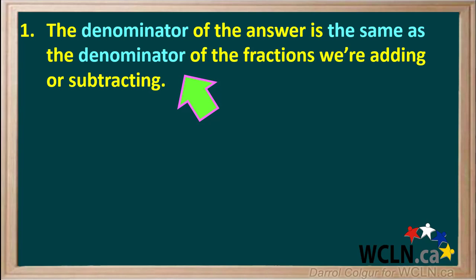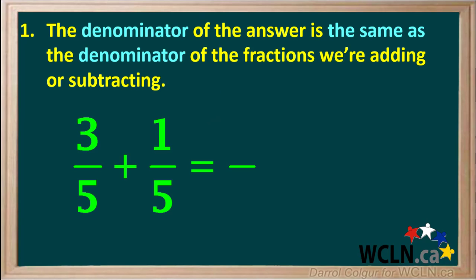There are five main things we need to remember when adding or subtracting fractions with common denominators. Firstly, the denominator in the answer is the same as the denominator in the fractions we're starting with. For example, if we're adding 3 fifths and 1 fifth, the denominator of the answer will be 5.